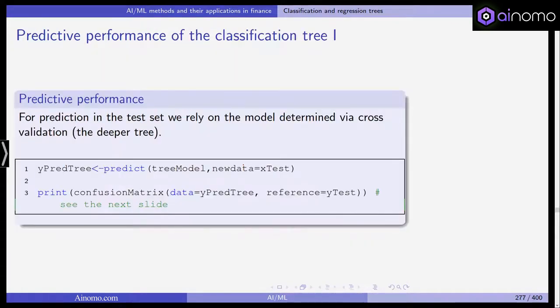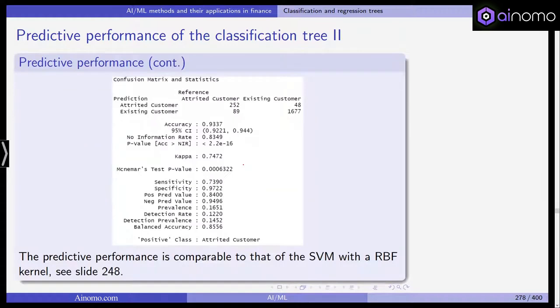What's the predictive performance of this classification tree? We rely on the model determined via cross-validation, which is the deeper tree. We don't use the shallow one with only two levels. We use predict and we print the confusion or error matrix based on the test data sample.